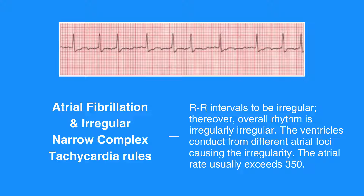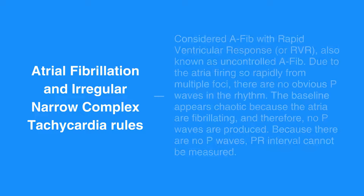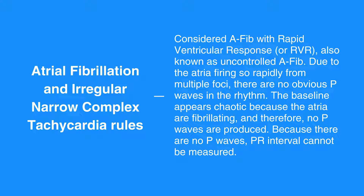The atrial fibrillation and irregular narrow complex tachycardia, or AFib, rules include R-R intervals to be irregular; the overall rhythm is irregularly irregular. The ventricles conduct from different atrial foci causing the irregularity. The atrial rate usually exceeds 350. If the ventricular rate is between 60 and 100 beats per minute, this is known as controlled AFib. If the ventricular rate is more than 100, it's considered AFib with rapid ventricular response, or RVR, also known as uncontrolled AFib. Due to the atria firing so rapidly from multiple foci, there are no obvious P-waves in the rhythm. The baseline appears chaotic because the atria are fibrillating, and therefore no P-waves are produced.